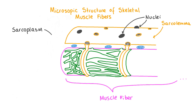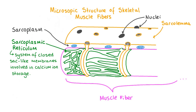The cytoplasm within a muscle fiber is called the sarcoplasm. In most animal cells the main role of the endoplasmic reticulum is as a site of protein synthesis, modification, and transport. Muscle fibers contain a specialized endoplasmic reticulum called the sarcoplasmic reticulum which extends throughout the muscle fiber and contains calcium ions, which are needed to initiate muscle contraction.